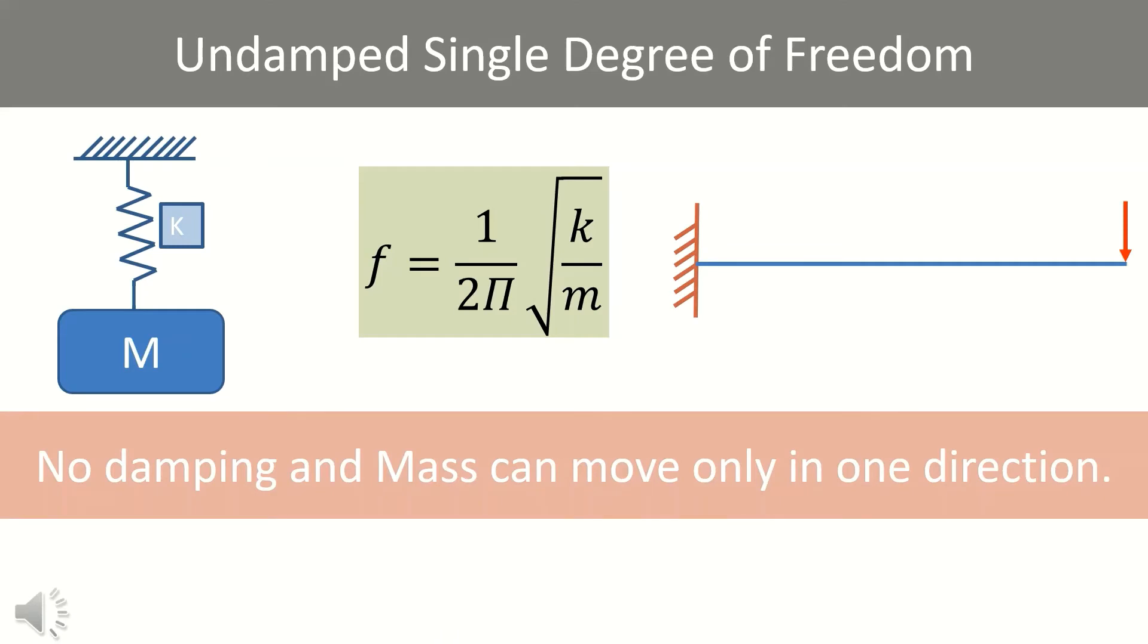In this clip, for ease of understanding, we will discuss the most simple model which is undamped single degree of freedom, meaning there is no damping and mass can move only in one direction. Let's consider a cantilever beam having concentrated mass at end of the beam. Actually there are infinite degrees of freedom in the cantilever beam due to self-weight. However, for simplicity, we will ignore mass due to self-weight in this example. Also, as discussed earlier, we will consider damping as zero.